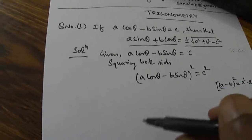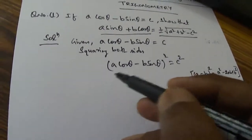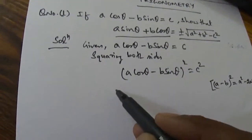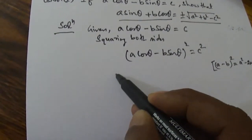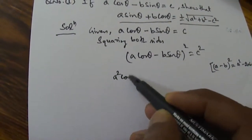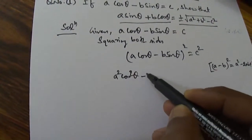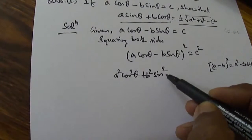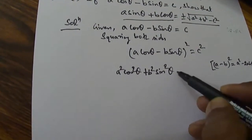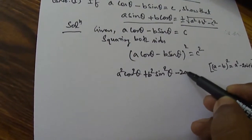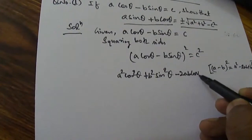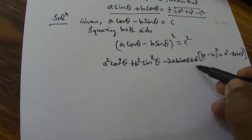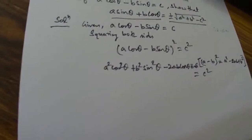Now we will be applying the same formula here. So we will be writing A squared cos squared θ plus B squared sin squared θ and minus 2AB cos θ sin θ, and it is equal to C squared.